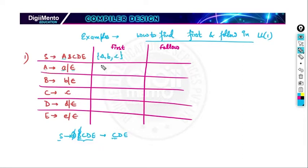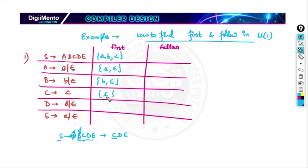FIRST(A) = {a, epsilon}. FIRST(B) = {b, epsilon}. FIRST(C) = {c}. FIRST(D) = {d, epsilon}. FIRST(E) = {e, epsilon}. As discussed in previous lectures, FIRST may contain epsilon, but FOLLOW never contains epsilon. Now, since S is the starting symbol, FOLLOW(S) = {$}.